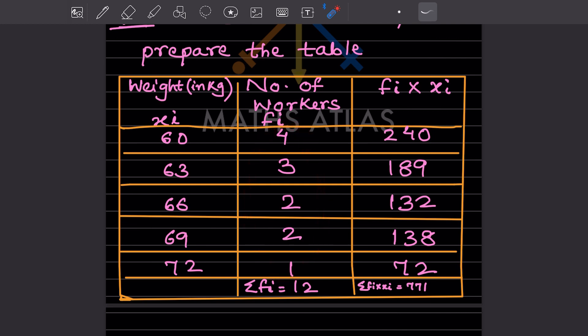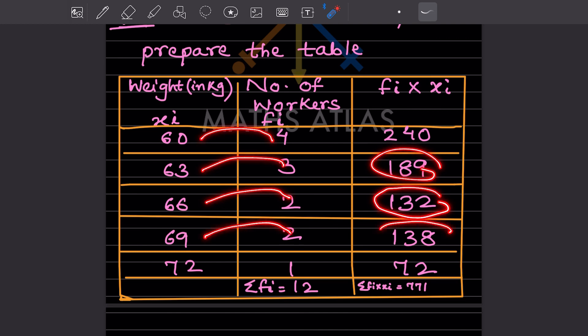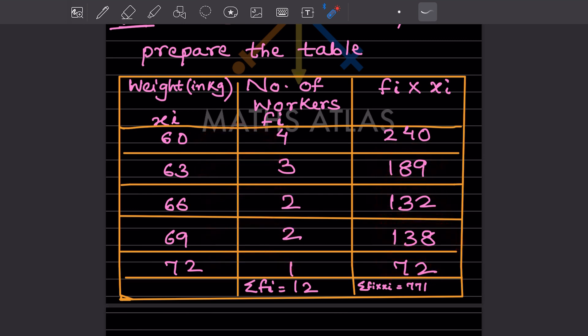Fi times xi means you multiply: 60 times 4 equals 240, 63 times 3 equals 189, 66 times 2 equals 132, 69 times 2 equals 138, and 72 times 1 equals 72.